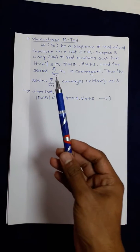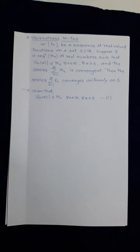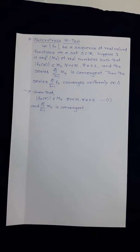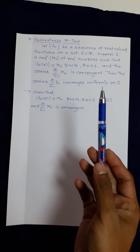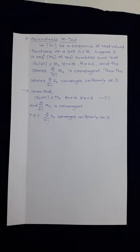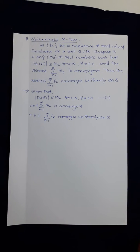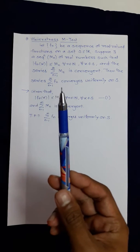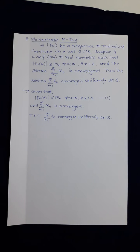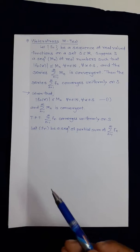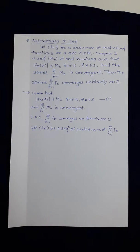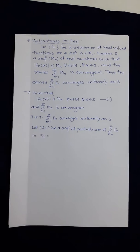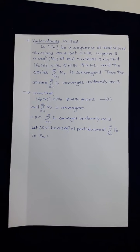The second important given condition is that summation M_n is convergent. We have to prove that the series summation f_n converges uniformly. When we discuss any result of series of functions, we consider a sequence of partial sums. So we consider S_n, the sequence of partial sums of the series, which is S_n = f_1 + f_2 + ... + f_n.